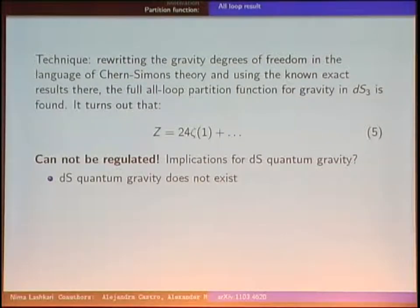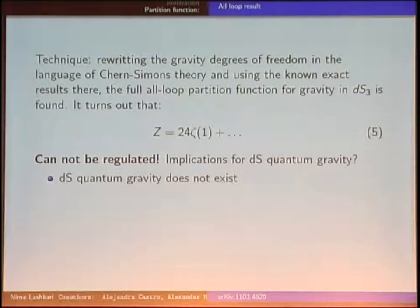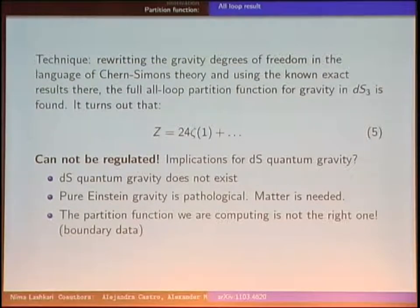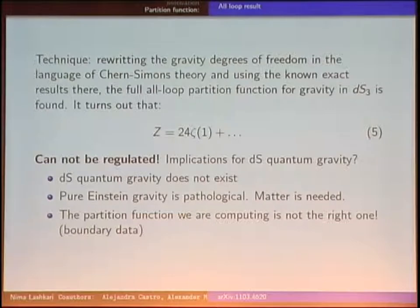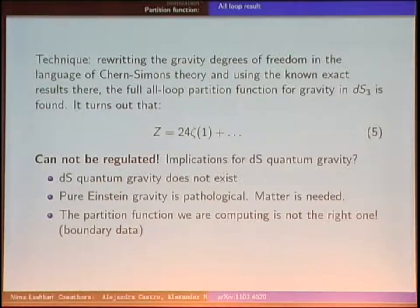We find a nice expression — a log of four sines. However, this partition function has a piece that diverges and cannot be regulated. There are three possible conclusions: first, pure de Sitter gravity does not exist as a sensible quantum theory; second, we should include matter — in another work with the same collaborators we consider topological massive gravity, and inclusion of the massive graviton mode removes this divergence; third, we have missed a physical point — perhaps there is important boundary data or something else we do not understand.